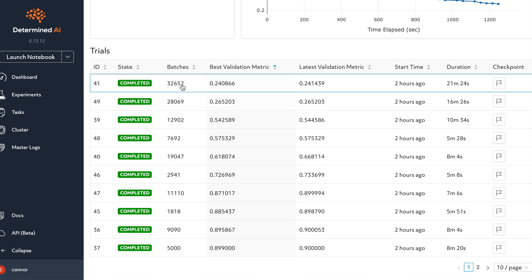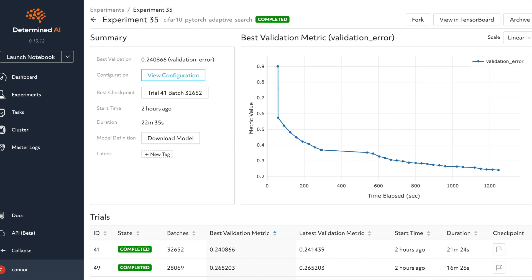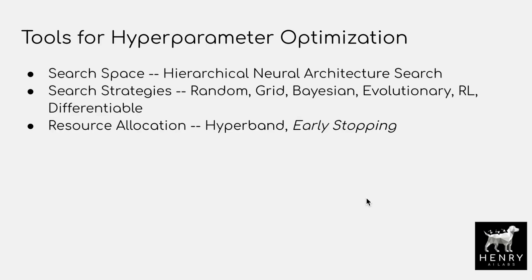Determined AI implements tools from an extensive body of AutoML and hyperparameter optimization research. Search strategies include random search, grid search, Bayesian optimization, evolutionary search, reinforcement learning search, and differentiable search — each with multiple research papers exploring them, with most focus on Bayesian search. There are also ideas like resource allocation via Hyperband — building on early stopping — and hierarchical neural architecture search, which looks at different ways of parameterizing the search space.